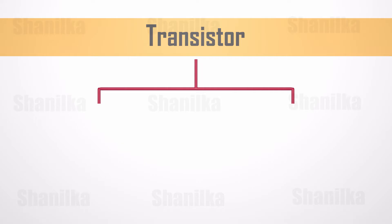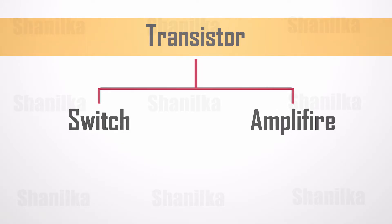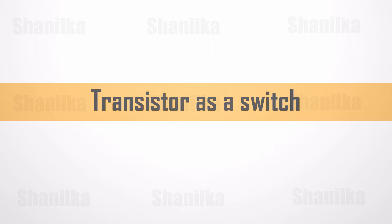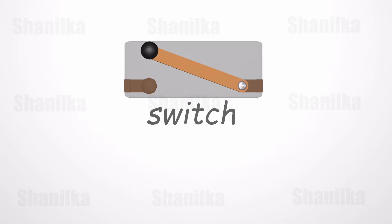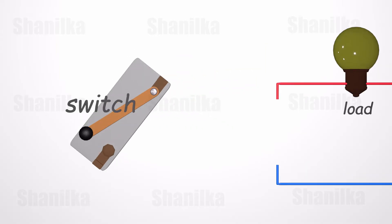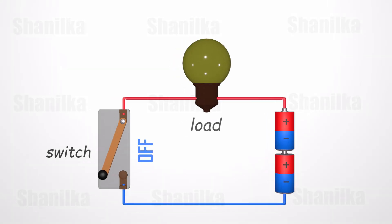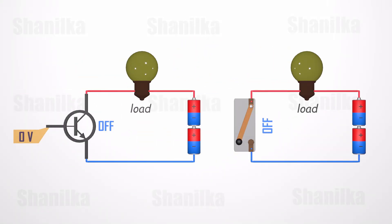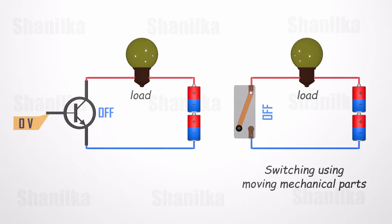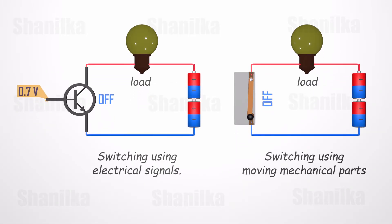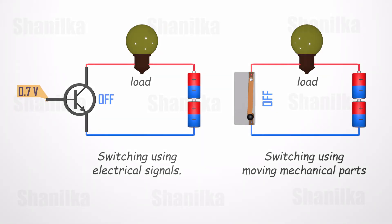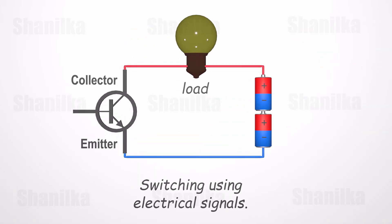We use transistors for two purposes: as a switch and as an amplifier. A switch is a device we use to power on and off a load. We are all familiar with mechanical switches. We can use the transistor for the same purpose. Instead of moving mechanical parts, the transistor turns on using an electrical signal. The switching happens between the collector and emitter terminals.